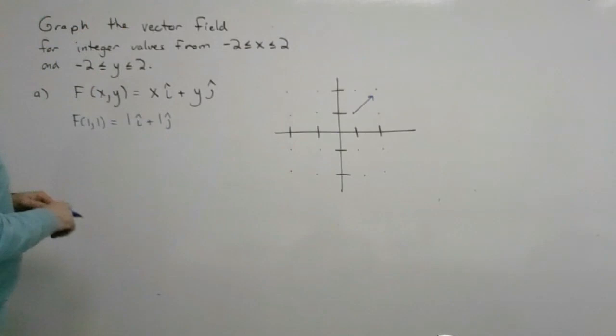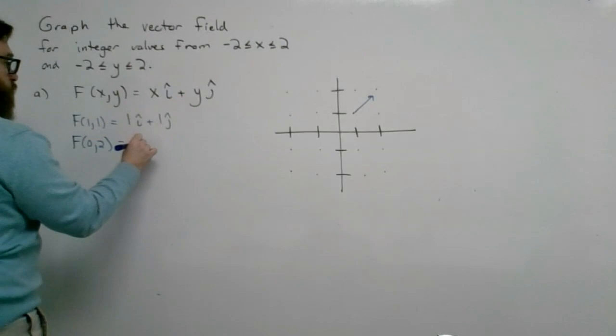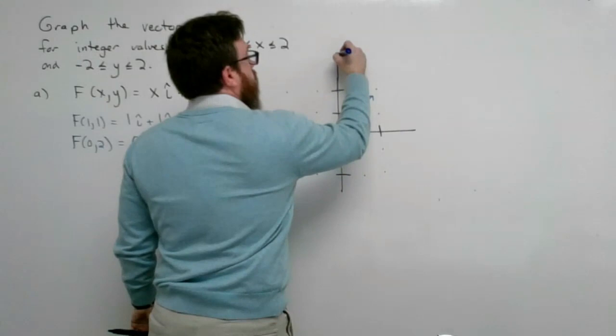For the point (0, 2), x is 0 and y is 2, so F(0, 2) = 0i + 2j. It only moves 2 units in the j direction at that particular dot.